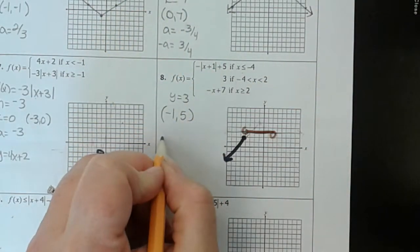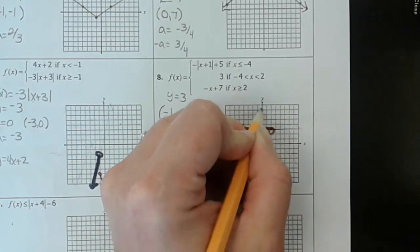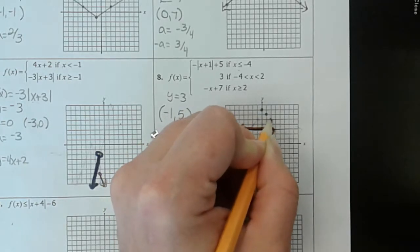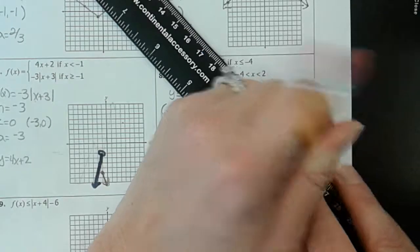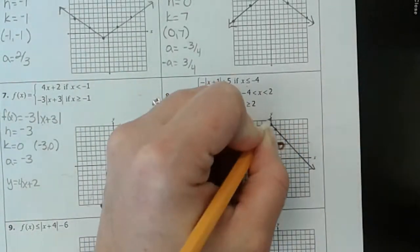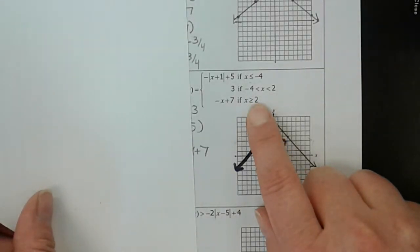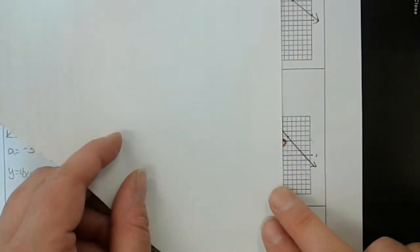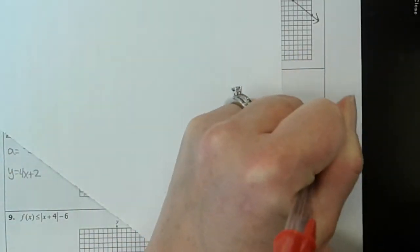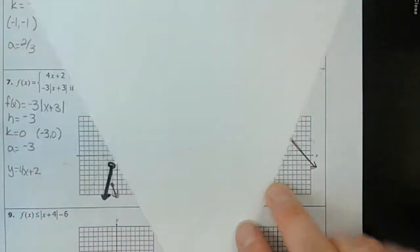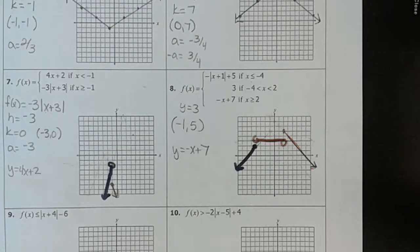Our final piece is just a line: y equals negative x plus 7. There's our y-intercept at 7, and it has a negative 1 slope. We're going to keep that from x equals 2 and higher, so at x equals 2 and higher we want to keep that function. We're going to do a closed circle because we want to include 2. So there is your scary, big scary piecewise function — not so scary anymore.